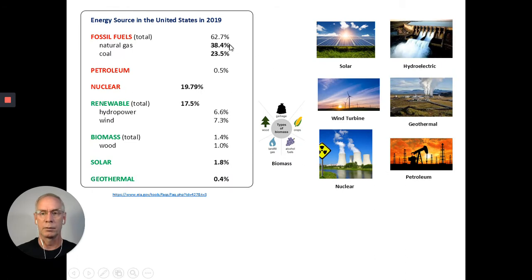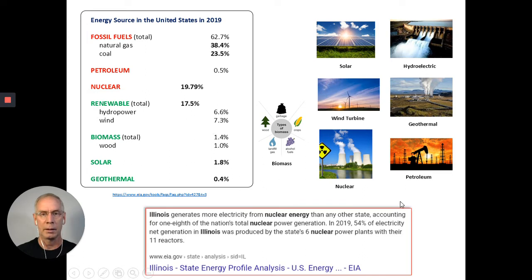We still are very reliant on fossil fuels, and we get some of our energy from nuclear, some from renewable, and solar and geothermal, almost none. Now in Illinois, I did a quick Google search. It says we get 54% of our energy in Illinois from nuclear reactors. One eighth of the nation's total nuclear power comes from Illinois. That's one of the reasons we're going to go through nuclear power, just to make sure as a citizen you understand the difference, what are the risks, what are the benefits. We'll actually do a whole separate unit on that, but for right now, I'm just going to introduce the difference between fission and fusion.